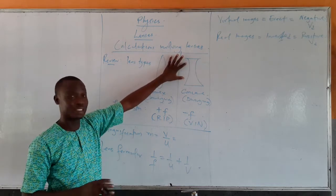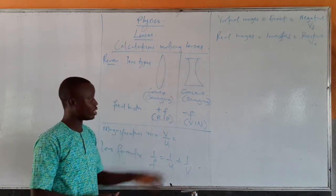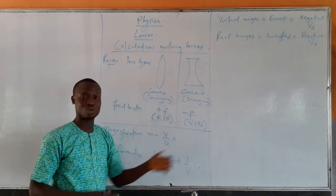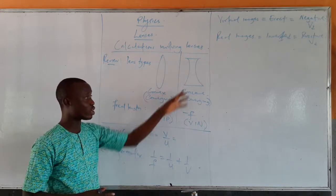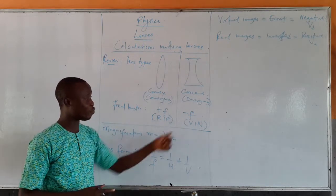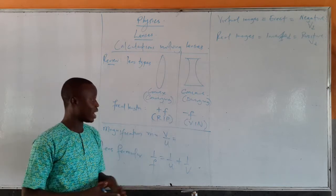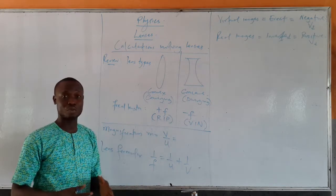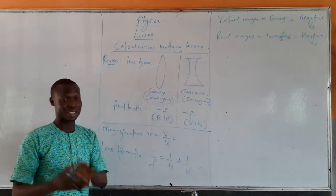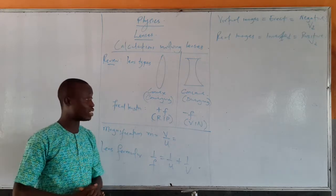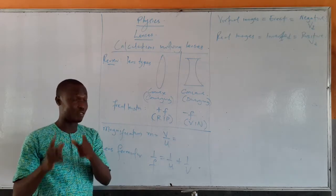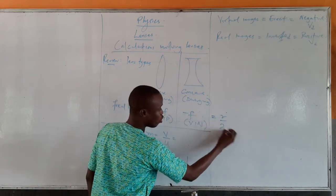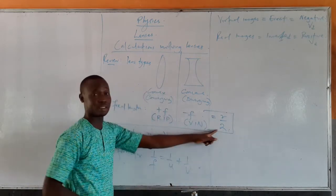For the concave lens, which is like the convex mirror, the focal length is always negative — virtual is negative. So when dealing with a concave lens, always take the focal length F to be negative, and take the focal length of a convex lens to be positive. Don't forget the focal length can always be obtained from the radius of curvature: F equals radius of curvature over 2.